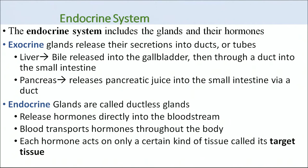For example, the liver is an exocrine gland — it secretes bile that is released into the gallbladder, then through a duct into the small intestine. The pancreas releases pancreatic juice into the small intestine through a duct. Endocrine glands, being ductless, release their hormones directly into the bloodstream, which transports them to the target tissue.